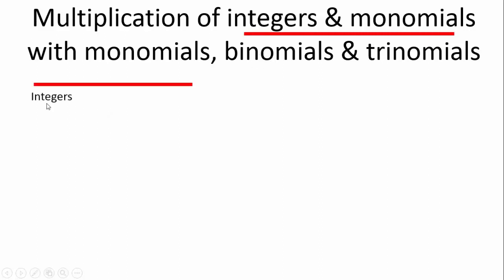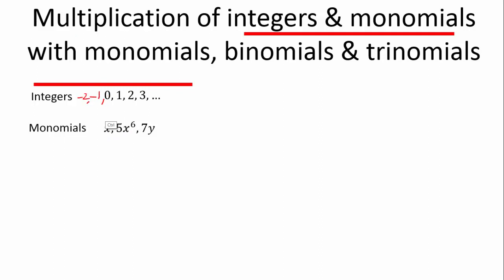What are integers? Simply integers are 0, 1, 2, 3 — they can be negative. We're going to do positive integers now. Monomials — that is any single term: x, 5x squared, 7y. There are no plus or minuses here. Remember integers can also go negative 1, negative 2, all the way down.